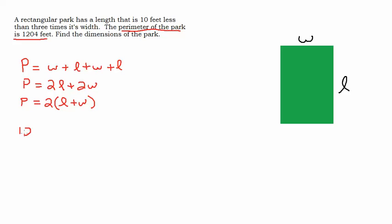So we have 1,204 equals, I'll go ahead and write 2l plus 2w. I'll use that one. What else do we know? We know that the length is 10 feet less than three times its width.